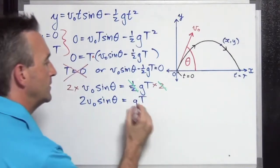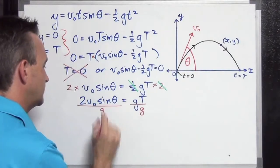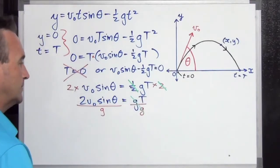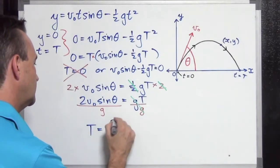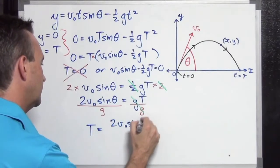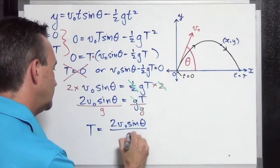One more step. Let's get rid of the G by dividing it on both sides. G's cancel out, and we're going to be left with, and we'll flip this around, T equals two V naught sine theta all over G.